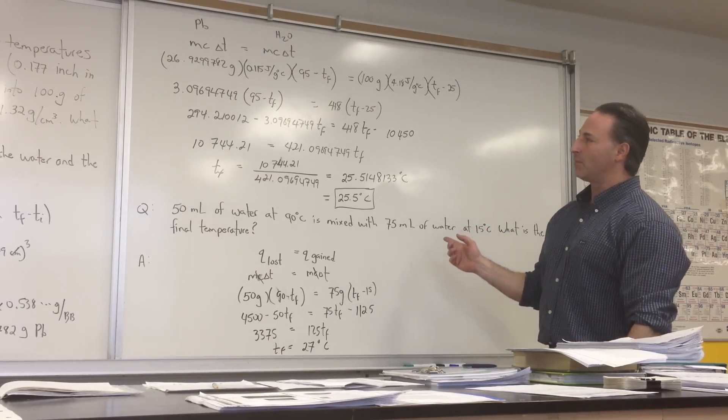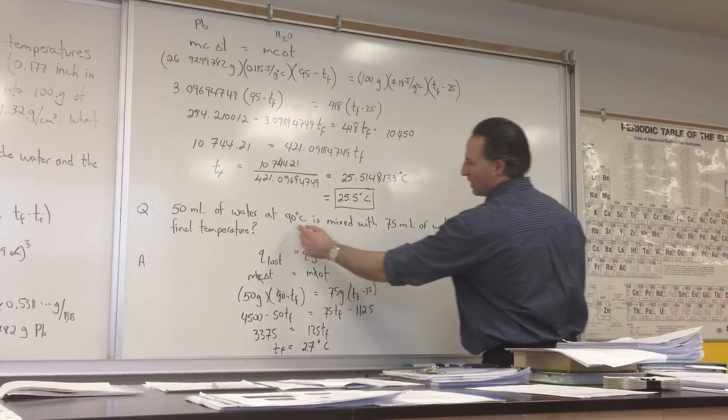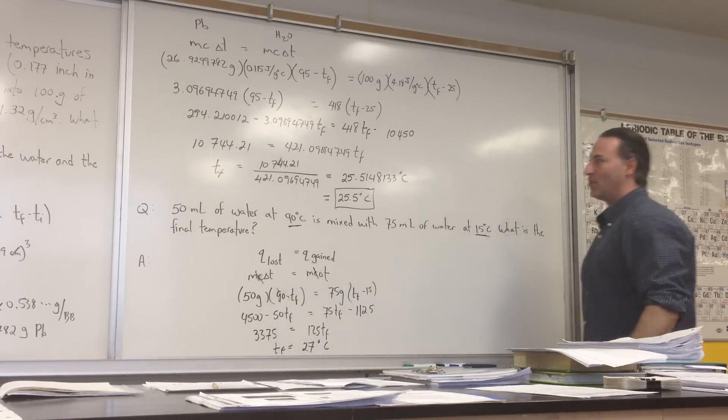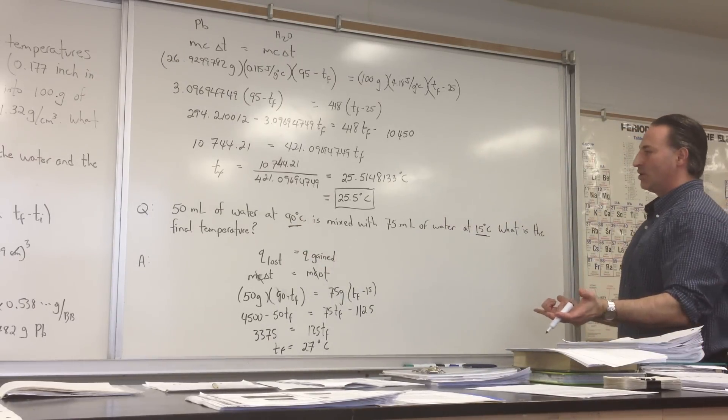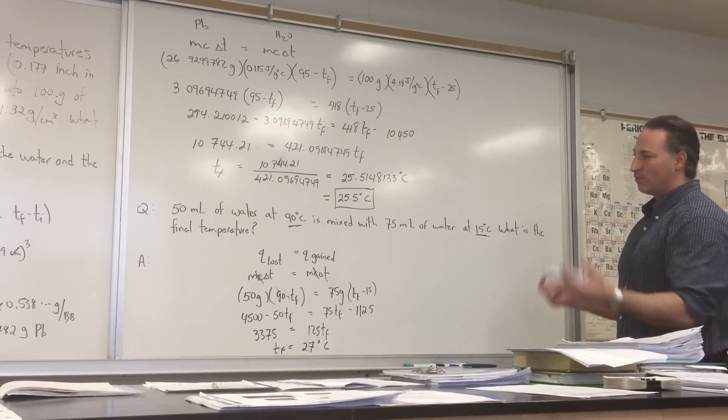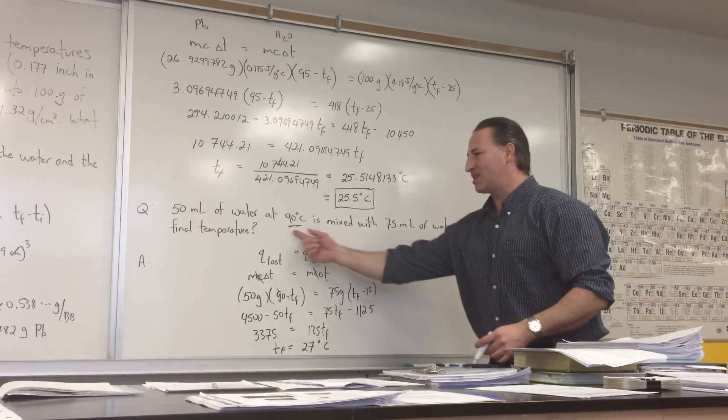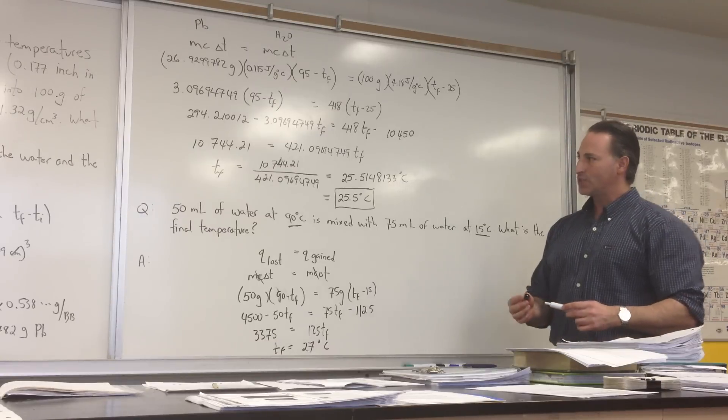When you do these types of problems, your answer should always fall between the initial and the final temperature. If you get an answer that falls outside of that range, either you've had a chemical reaction that was endothermic or exothermic, or you've miscalculated. If there's no chemical reaction, your temperature must fall between these two numbers. Any questions?